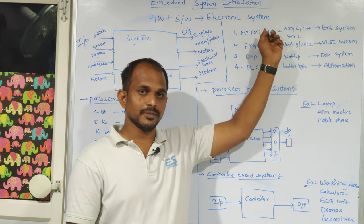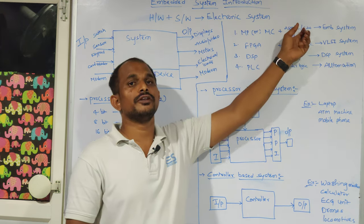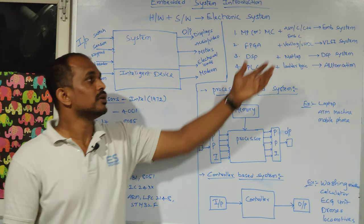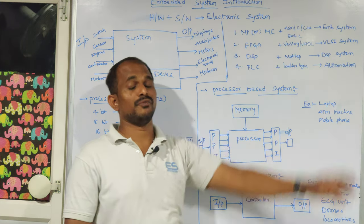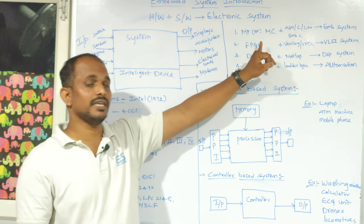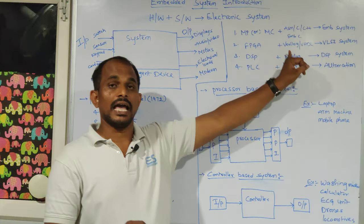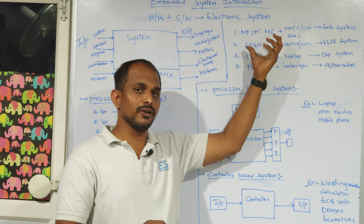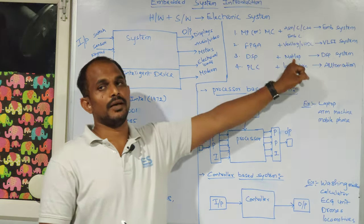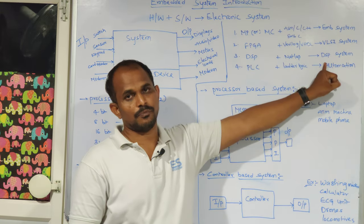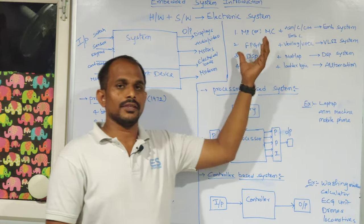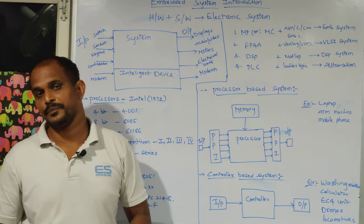When the intelligent device is an FPGA — Field Programmable Gate Array — with Verilog or VHDL as the language, that electronic system is a VLSI system. If you use a digital signal processor with MATLAB, it is a DSP system. If you are developing automation applications, you focus on PLCs and ladder logics. The language and intelligent device combination always decides the domain.